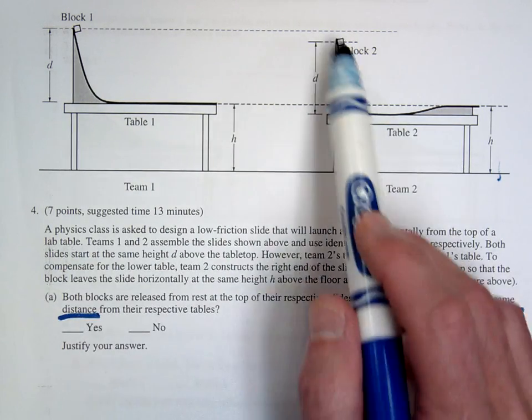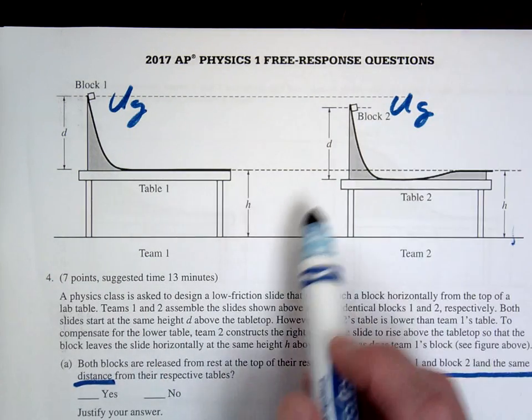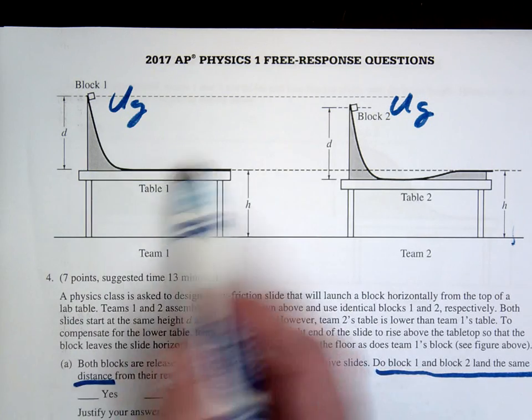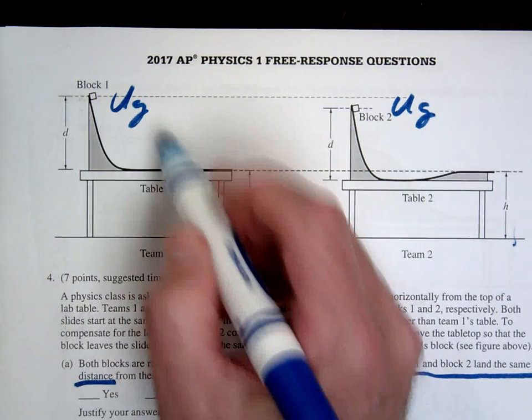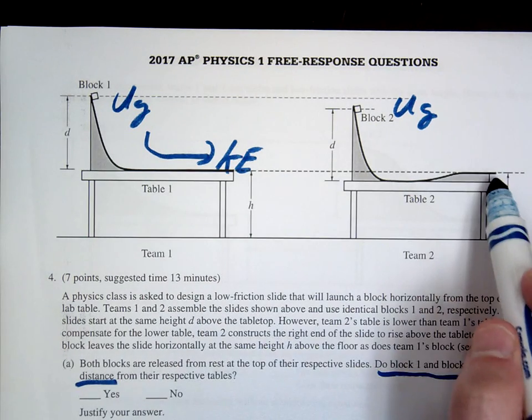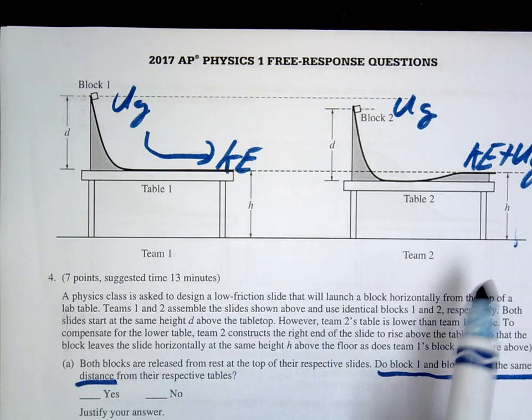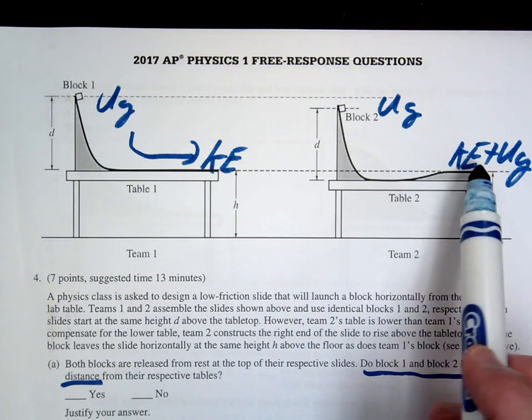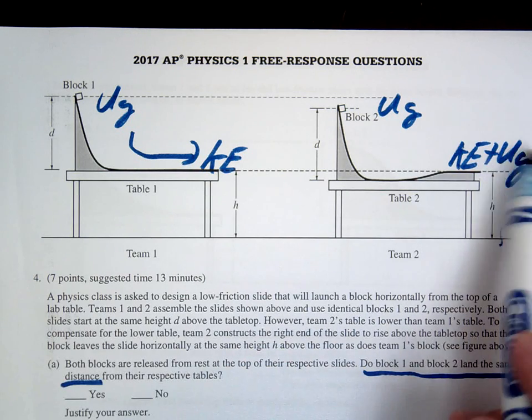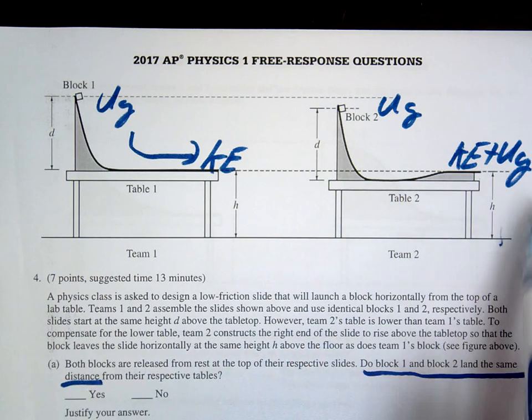In the second case, if you notice, right here we have UG and UG. If we call the table the ground state, they have the same amount. At this point, all of the UG turns into KE. At this point you still have some UG, so this would be KE plus UG. Therefore this should be moving at a smaller velocity because it still has some potential energy. Since it's going a smaller velocity, it should land a shorter distance.